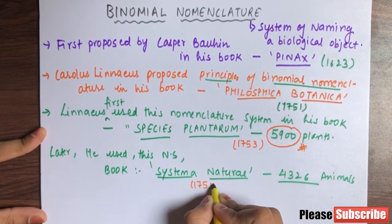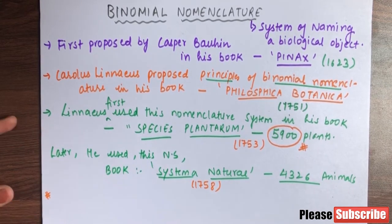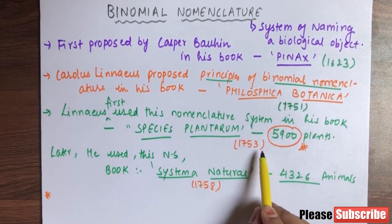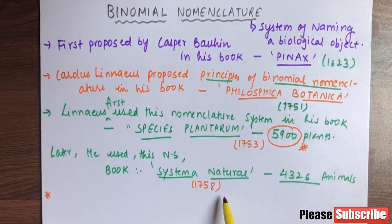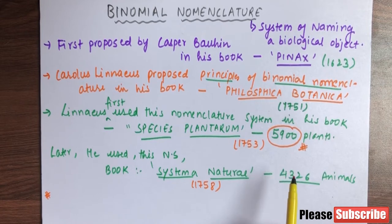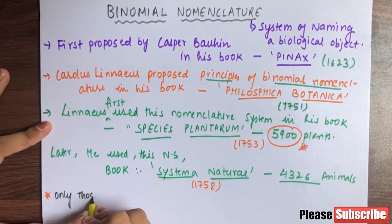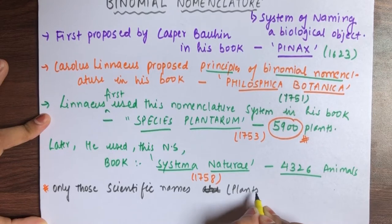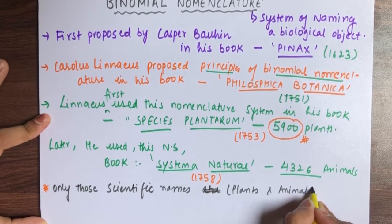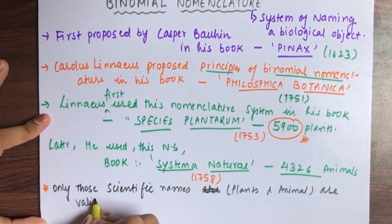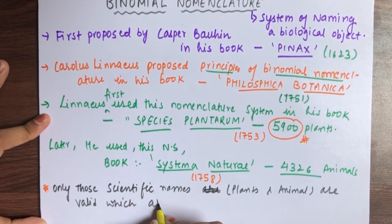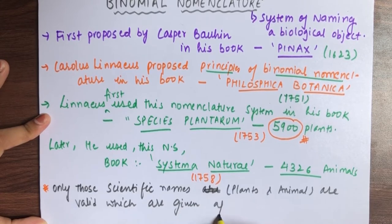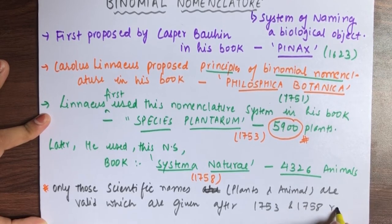Species Plantarum came in 1753. Later, he also used this nomenclature system in another book called Systema Naturae, which covered animals and came in 1758. So scientific names for plants given after 1753 and for animals after 1758 are considered valid.